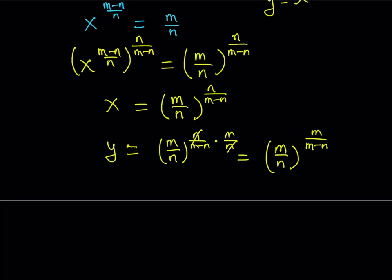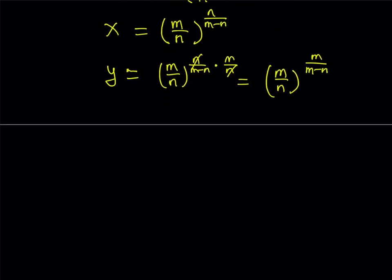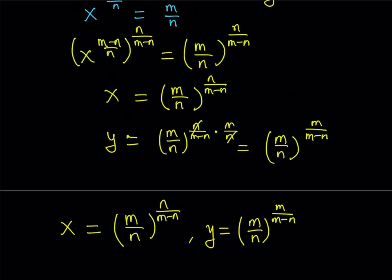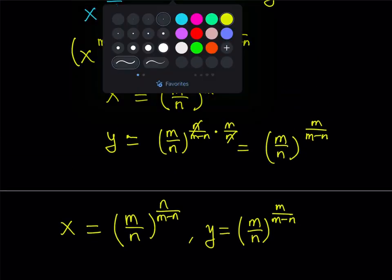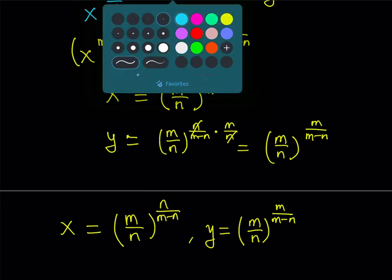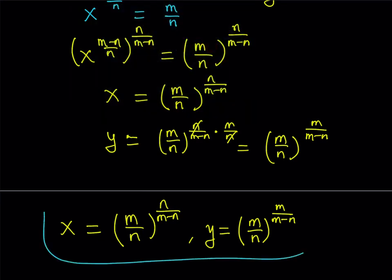So that's our solution. x equals m over n to the power n over m minus n, and y equals m over n to the power m over m minus n. They have the same base but different exponents. By substituting these values into the original equations, you can verify that the solutions hold.